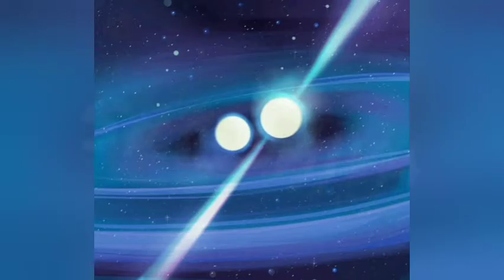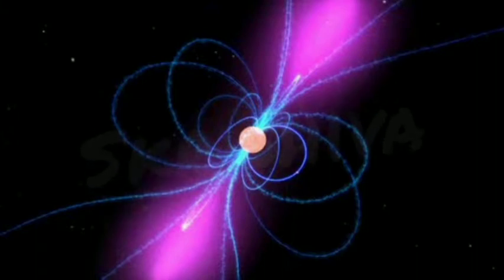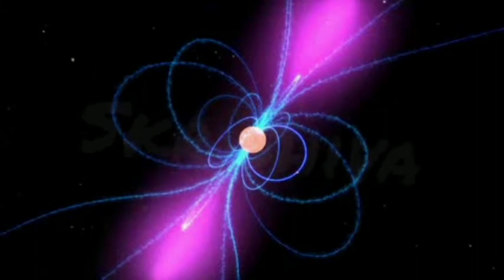Pulsars spin because the stars from which they formed also rotate, and the collapse of the stellar material will naturally increase the pulsar's rotation speed. Bringing mass closer to the center of a spinning object increases its rotation speed.